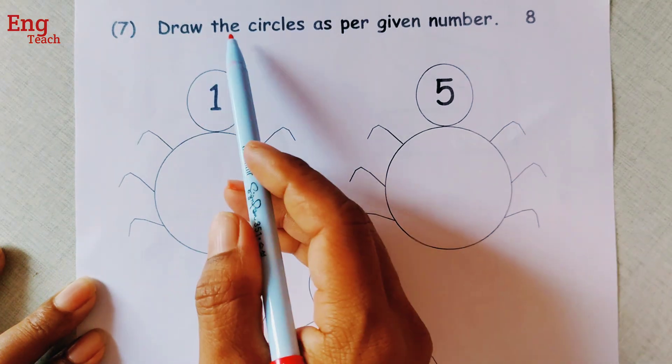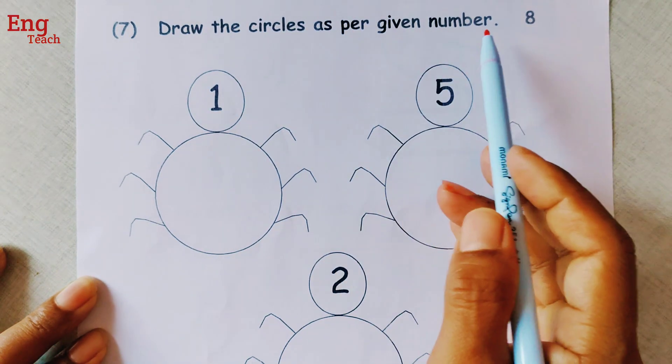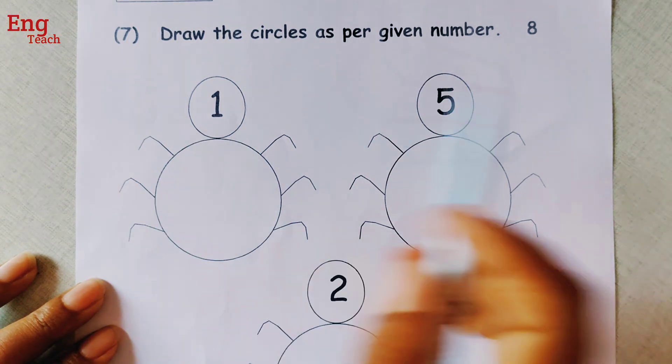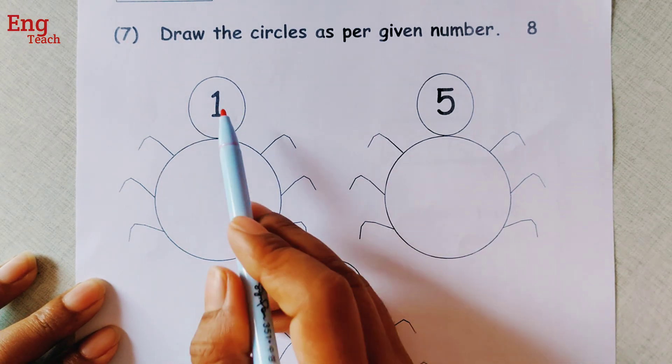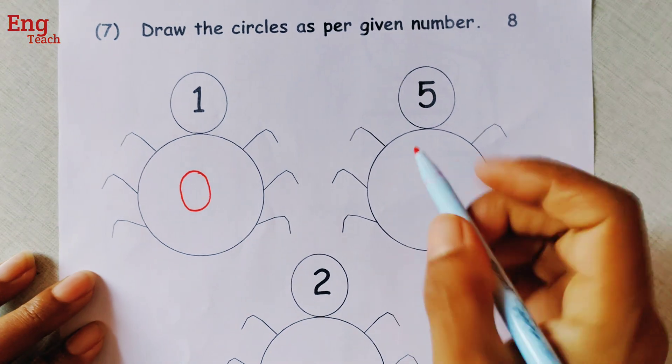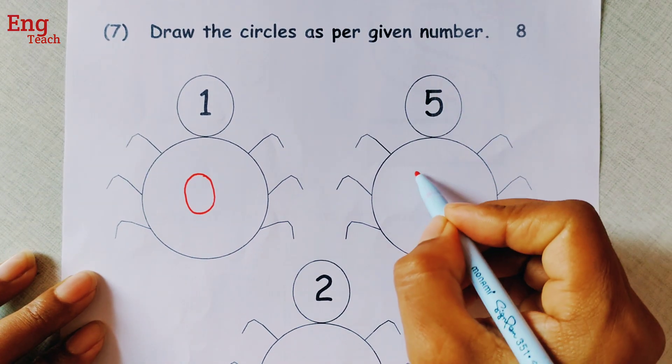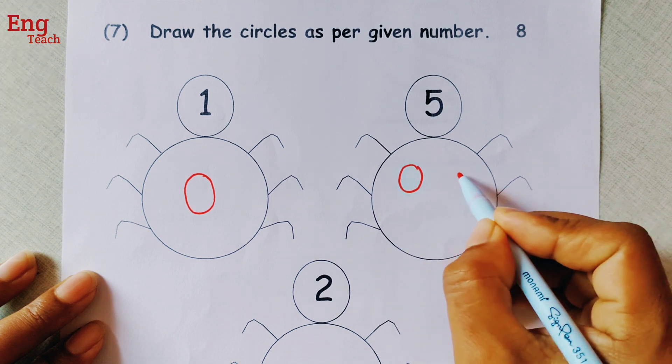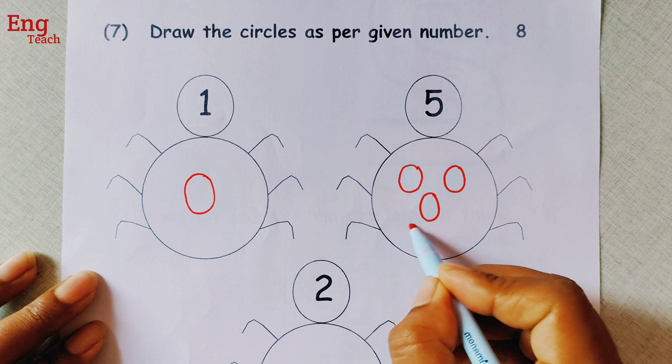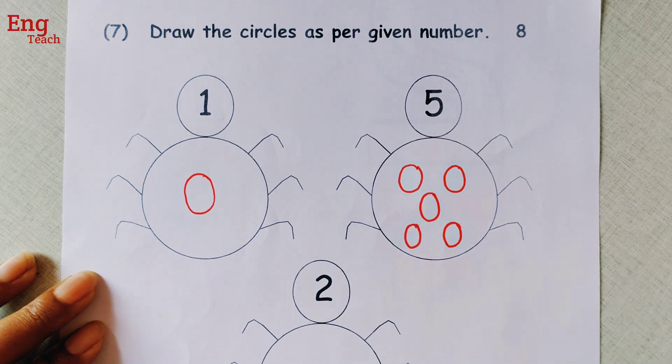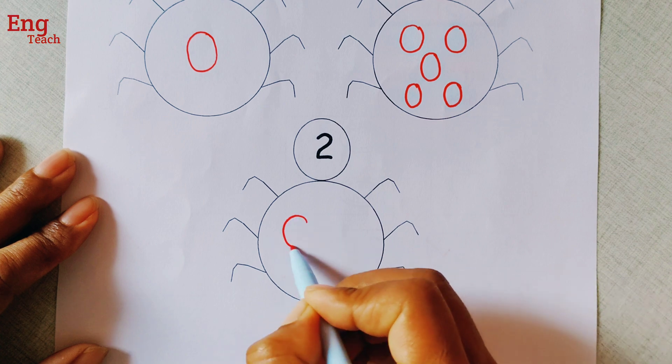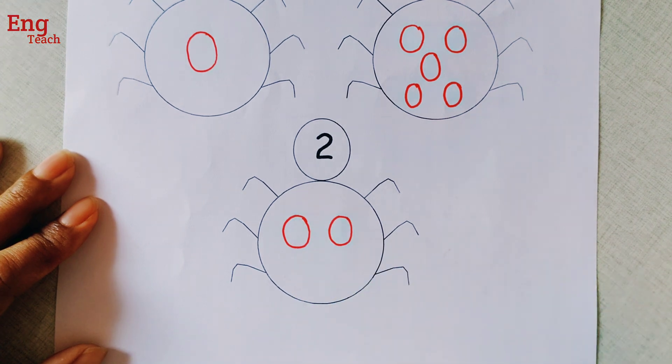Now number 7, draw the circle as per given numbers. We have to draw circles here as per the given numbers. Here is given number 1, so we have to draw only 1 circle. And here 5, so we have to draw 5 circles. 1, 2, 3, 4, and 5. And here 2, so we have to draw 2 circles here.